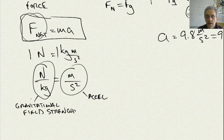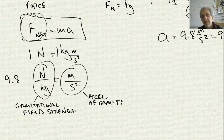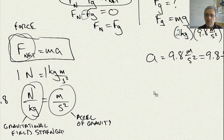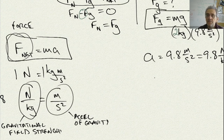Sometimes physicists refer to 9.8 m/s² as acceleration, and sometimes as the gravitational field strength. They are the same thing. So that gives insight into the force of gravity: F_g = M times G, and the most important equation is F_net = MA.